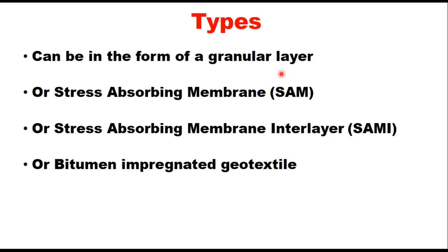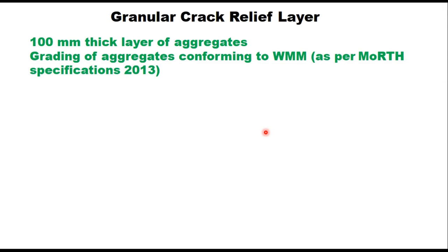There can be four types of crack relief layer. It can be in the form of a granular layer, or a stress absorbing membrane (SAM), or a stress absorbing membrane interlayer (SAMI). SAM and SAMI are similar except that the quantity of binder and stone chips differ slightly; their function and laying procedure are the same. The fourth type is bitumen impregnated geotextile.